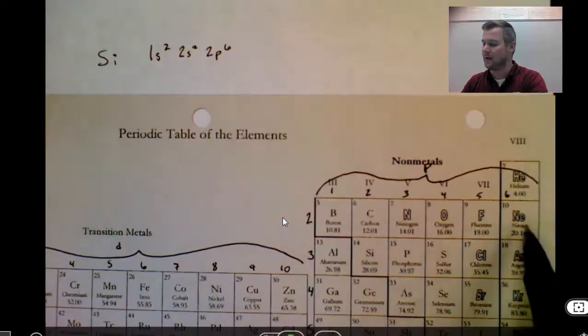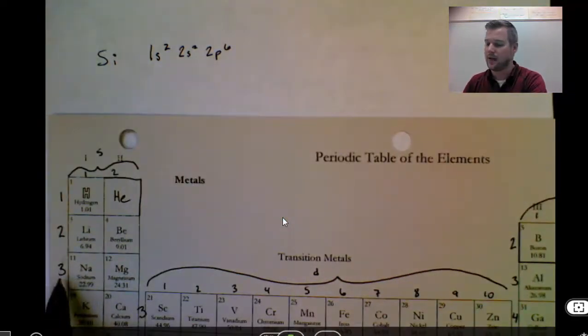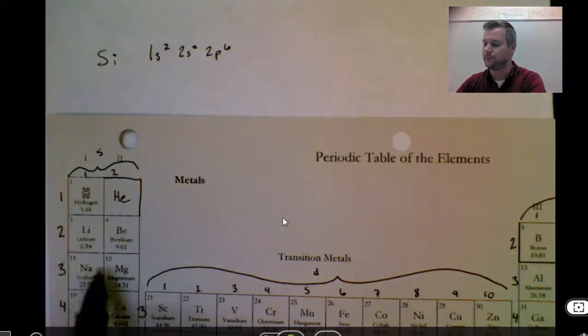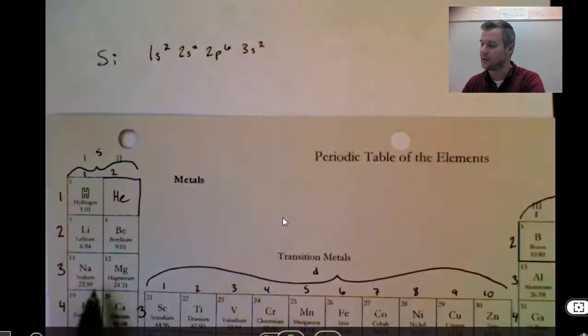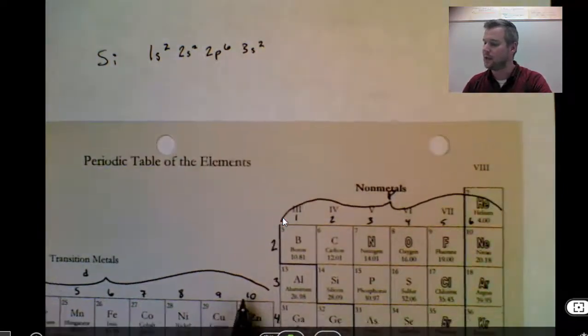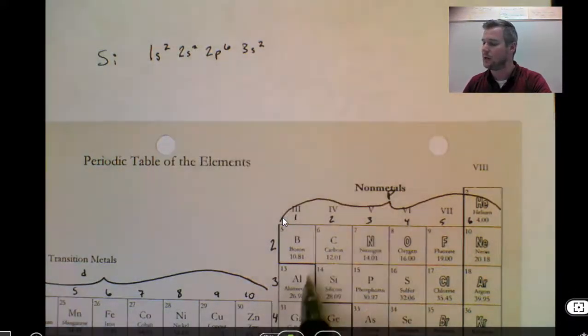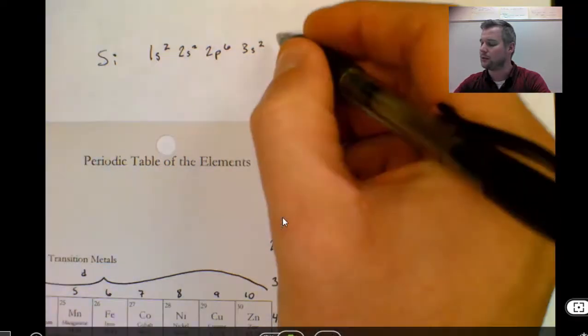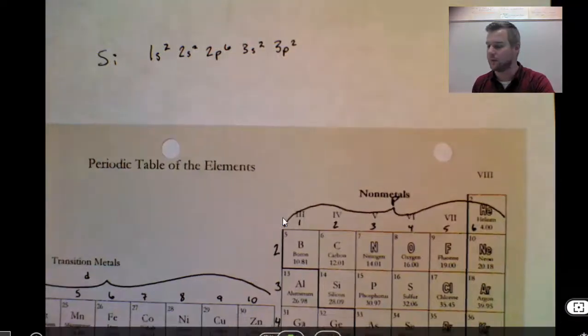I cannot go further right, so I come back into the left, just like you're reading a book. The number is 3s, 1 and 2. I can go further right yet. I get into aluminum, and now I have 3P, but I need to stop at silicon, so 3P1, 3P2. So that's the electron configuration for silicon.